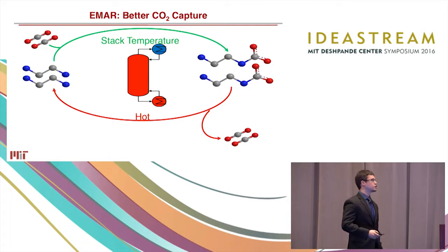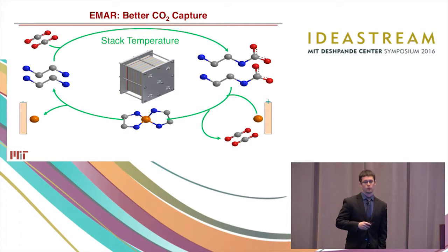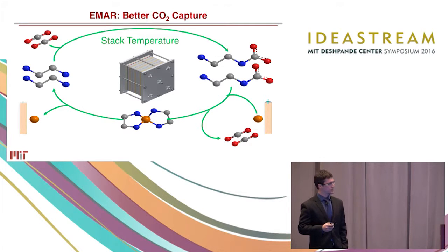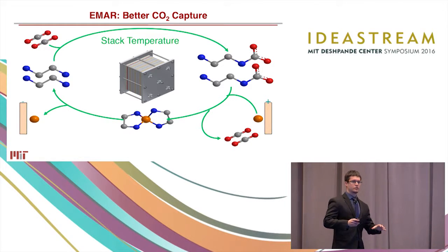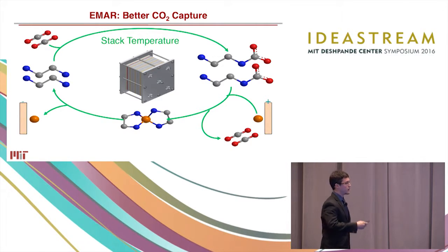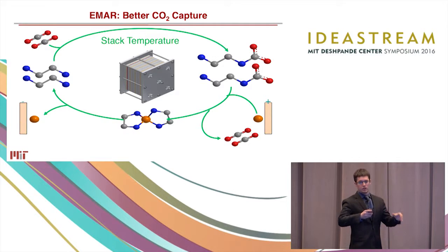An efficient one, an electrochemical method that we call EMAR or electrochemically mediated amine recovery. And what happens here is instead of using this heating process, we use an electrochemical process where on one side of an electrochemical cell we supply the amine bound CO2 with something that it likes more, copper.